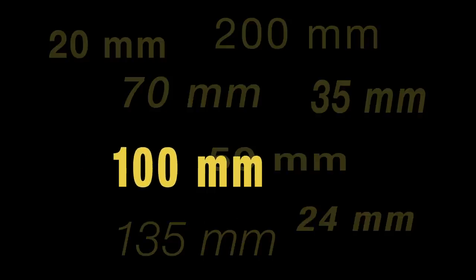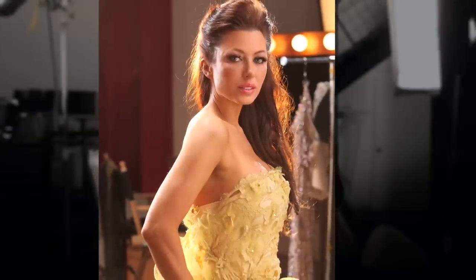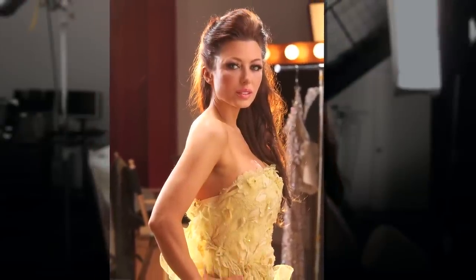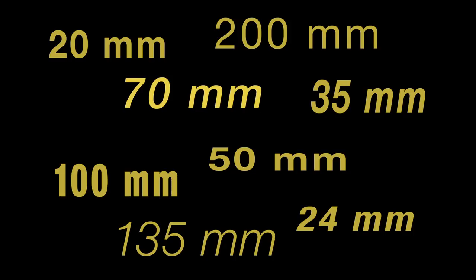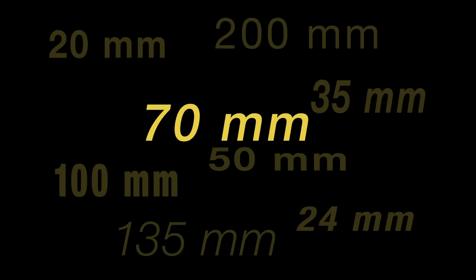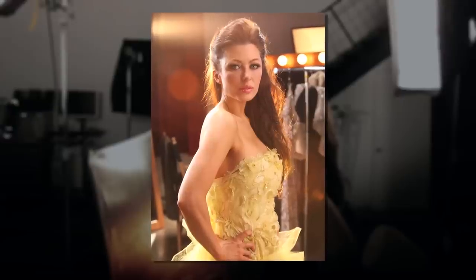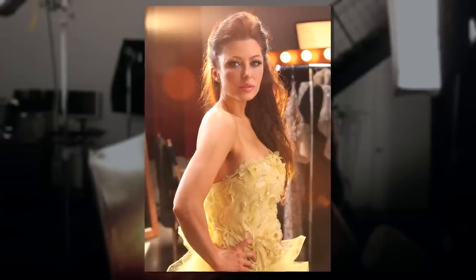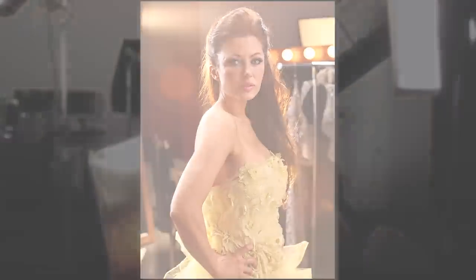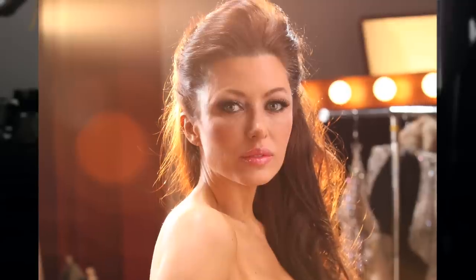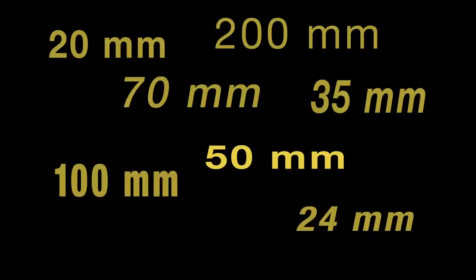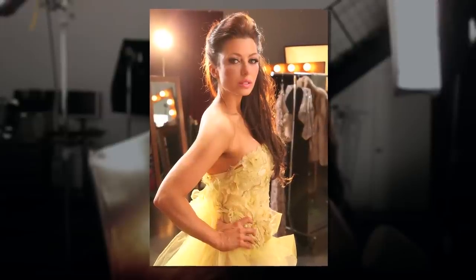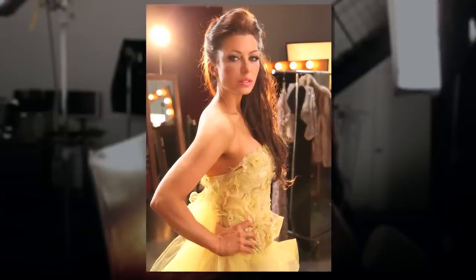Now to 100mm — she still looks good and we see more of the background elements. Now to 70mm. Even at 70mm she looks good but we see more of the background. We're starting to see our tungsten key light creeping in from the camera left side. Even still at this distance it's holding up and looking very good. Now to 50mm. We're far enough away from her that her head is only distorting just slightly, but we're seeing a lot more of the background.